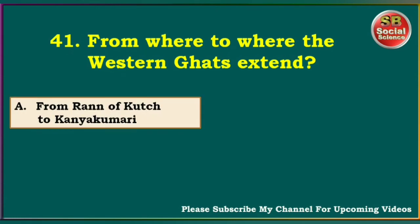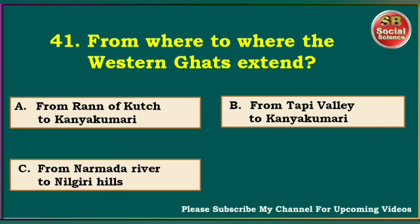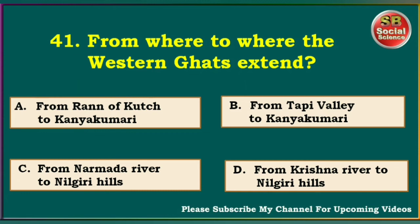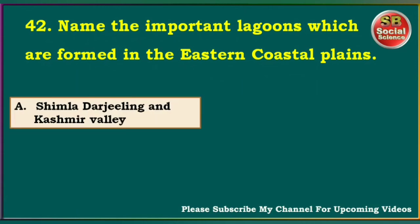From where to where do the Western Ghats extend? From Rann of Kutch to Kanyakumari, from Tapti Valley to Kanyakumari, from Narmada River to Nilgiri Hills, from Krishna River to Nilgiri Hills. The answer is from Tapti Valley to Kanyakumari.